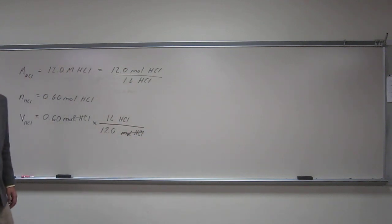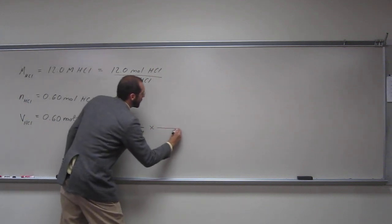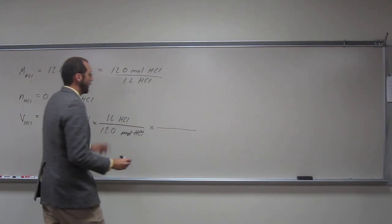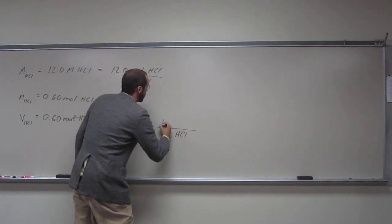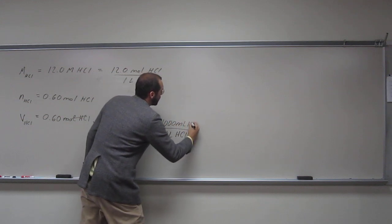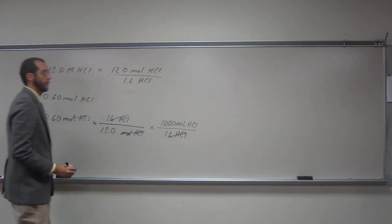And then, again, like I said, it gives you a few options, but one of the options that is the right answer is in milliliters. So one liter of the HCl solution is 1,000 milliliters of the HCl solution. So, like that.